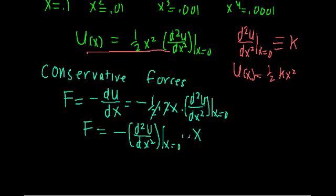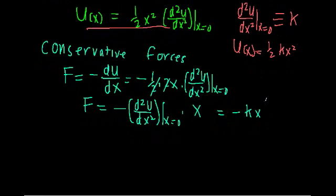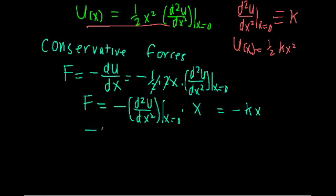Now this should hopefully look familiar, because this is the general form of our restoring force. This force is proportional to the displacement from equilibrium, but it's proportional in the opposite direction. And it's general because we have this constant term here. In different physical systems, this constant can take on different values. Like we found in the mass and spring system, that this second derivative of u with respect to x at x equals 0 is just our stiffness of the spring k. Which holds true — if we plug in k here, we get that F equals negative kx, which is just our Hooke's force for our mass and spring system. So here we have the general form of our restoring force that results from this general form of our parabolic potential energy.